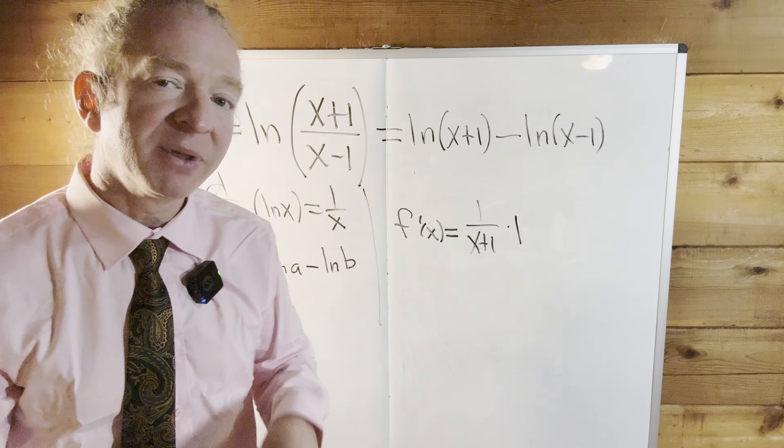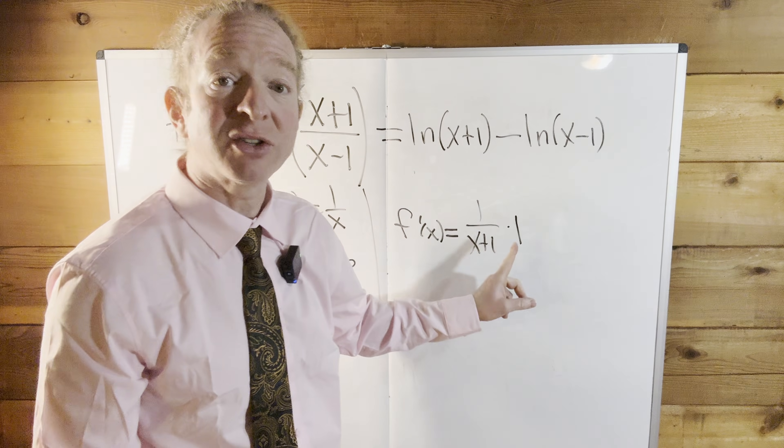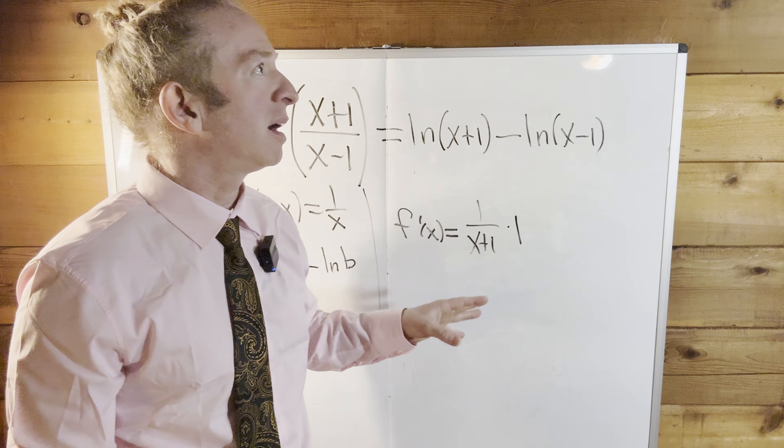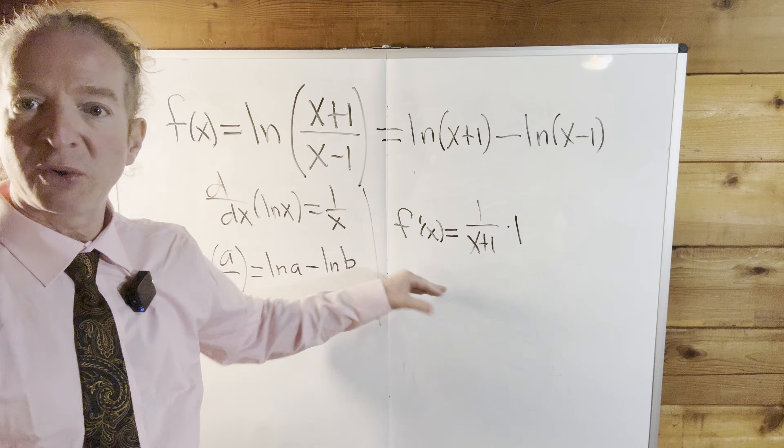You might say, well, you don't need to do that. Yes, you do. If this had been 2x plus 1, then we would have had a 2 here. So very common mistake is that people get overconfident and forget to use the chain rule. So use it when necessary.